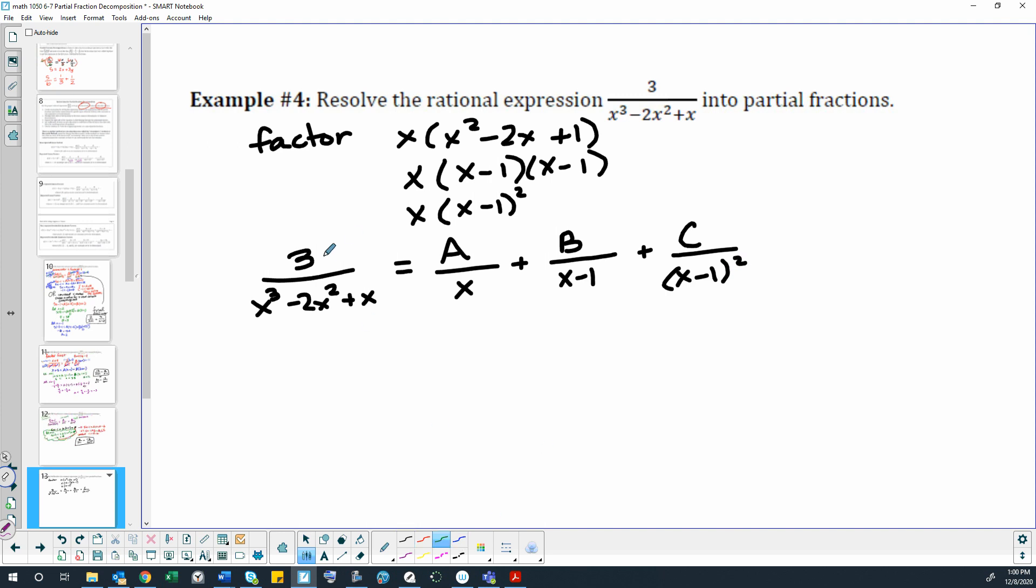So then when we multiply by our least common denominator, we're going to multiply by x times x minus 1 squared. So this goes away and then x times x minus 1 squared, so the x's go away.